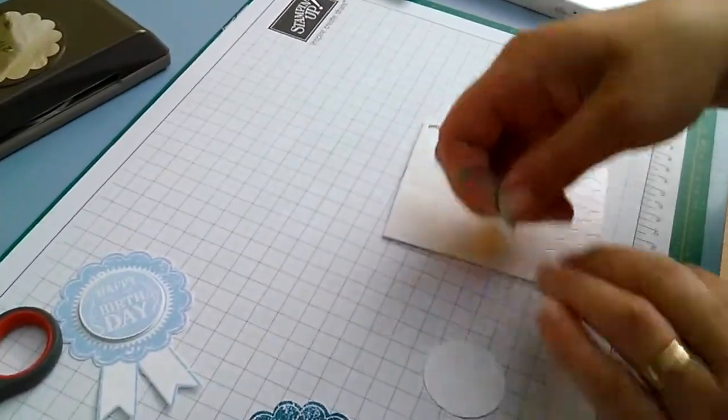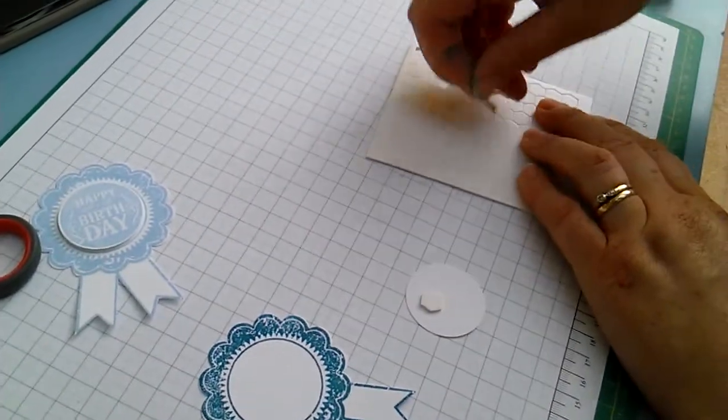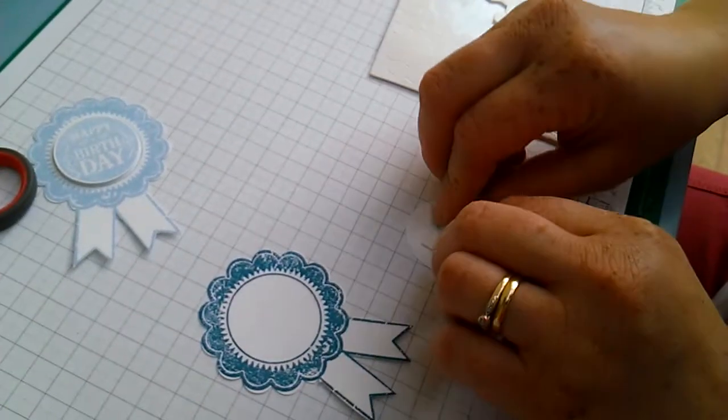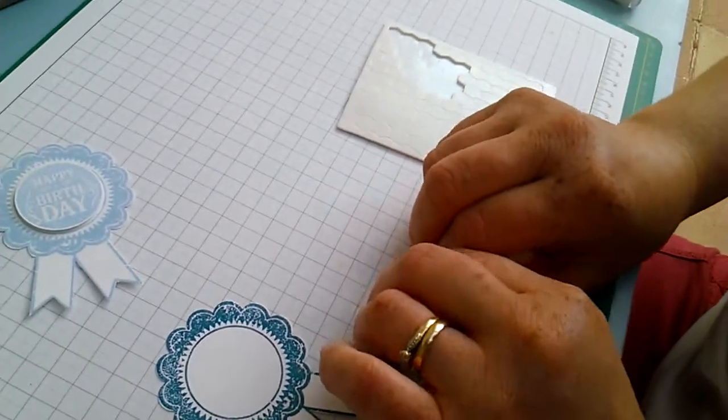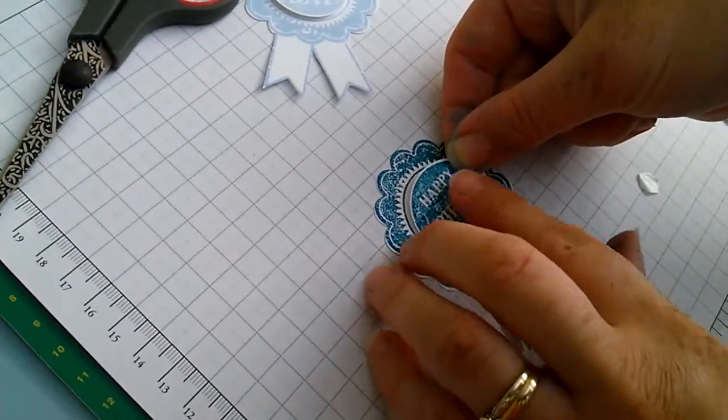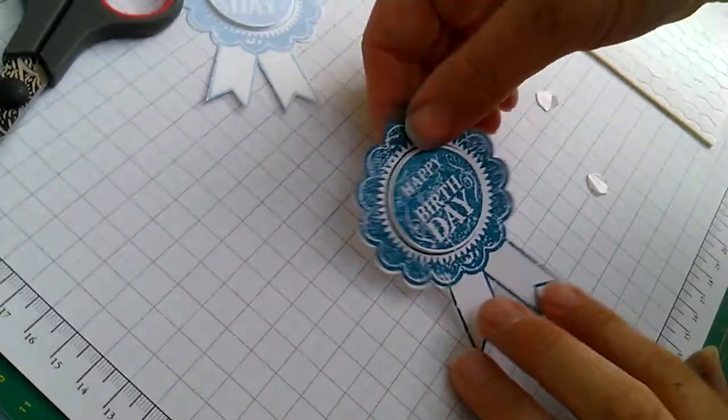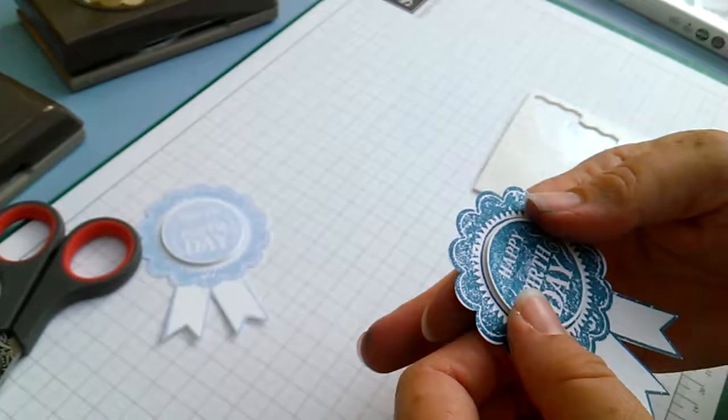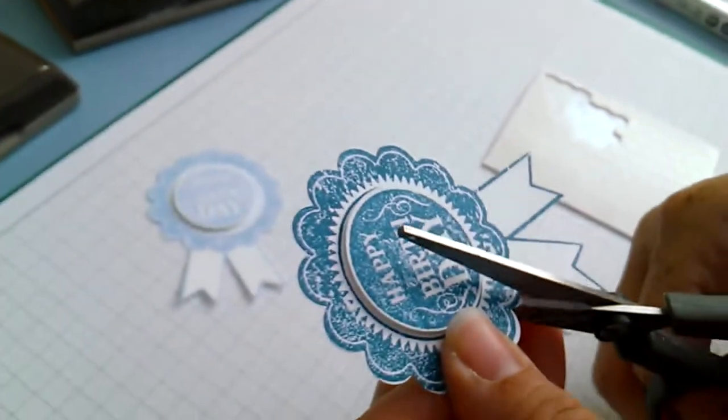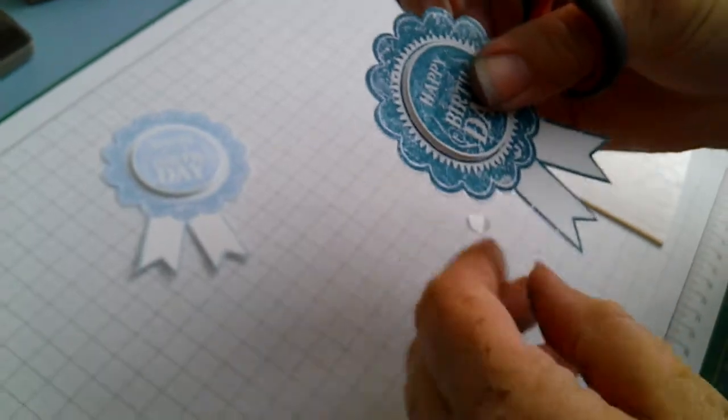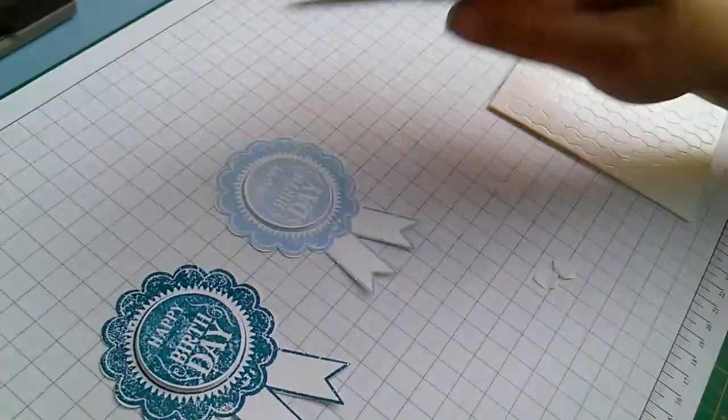Adhere some of these Stampin' Up dimensionals to the back. Position that in the middle and there is your rosette to use on your card. Nice and neatly cut out, apart from that tiny little bit there. There you go, two rosettes for the card.